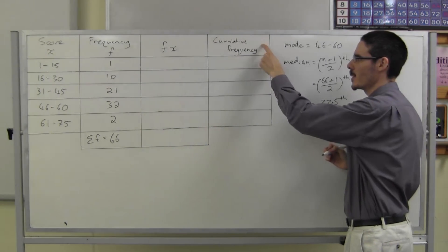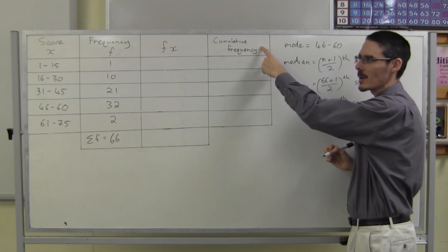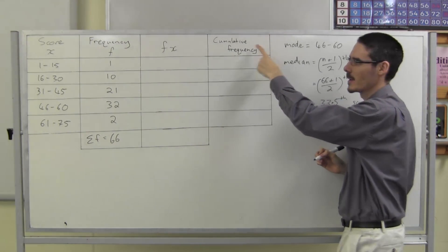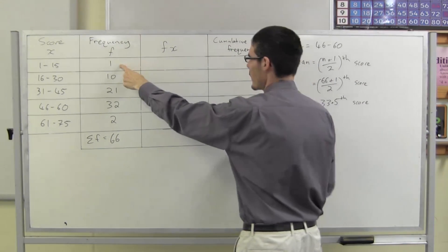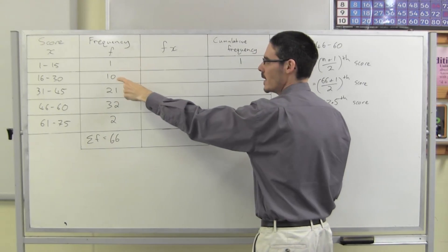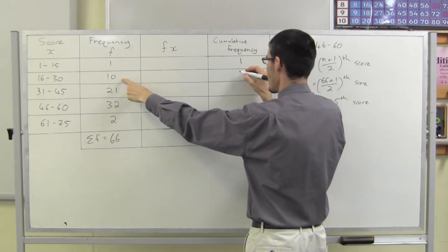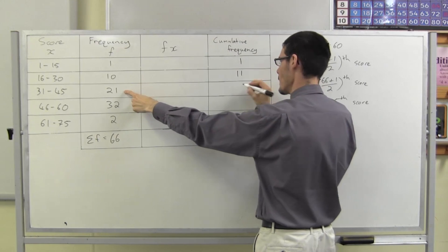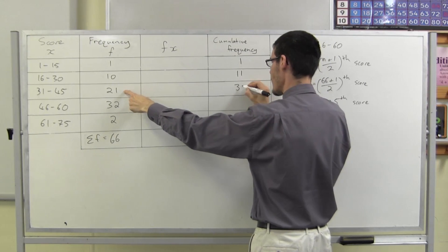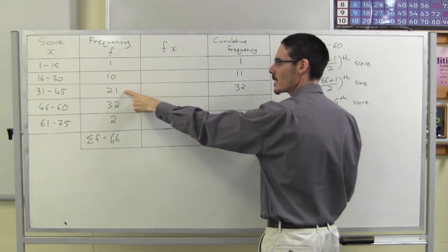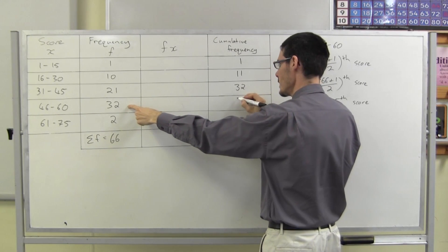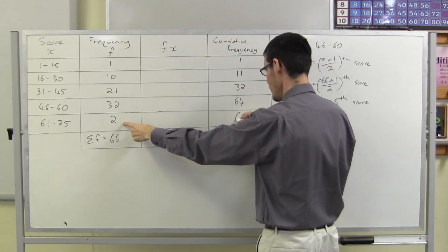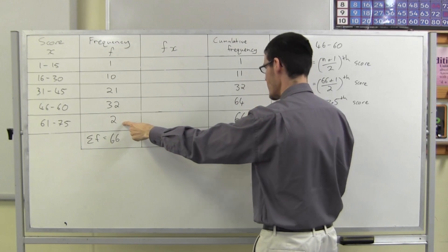Where do I find that? I'm going to have to use my cumulative frequency column — add the frequencies as we go. So far I've seen 1. Now another 10, making 11. Now another 21, making 32. Now another 32, making 64. Now another 2, making 66.